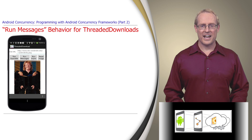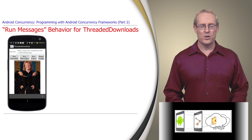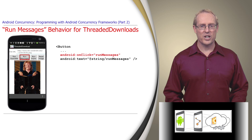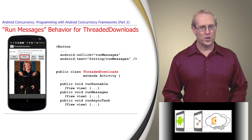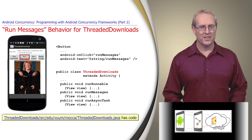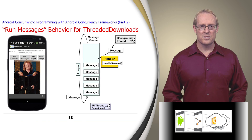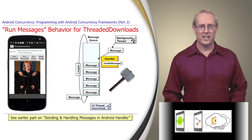We'll now analyze the second of the three concurrency models, which is triggered when the user selects the Run Messages button on the user interface. This selection initiates a call to the Run Messages method in the Threaded Downloads class, shown at this path name. This method uses the send message mechanism of the Hammer framework, described in an earlier video.